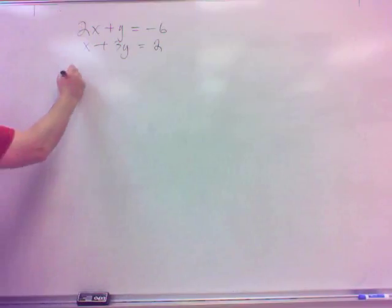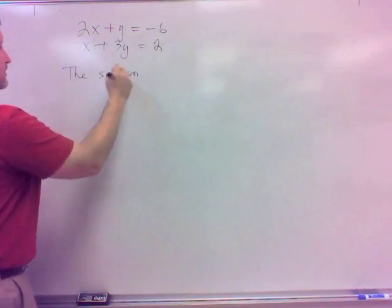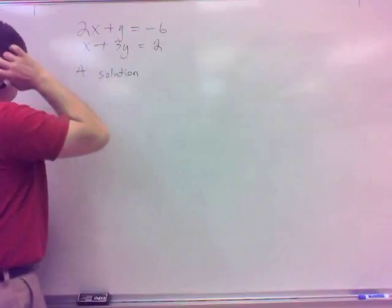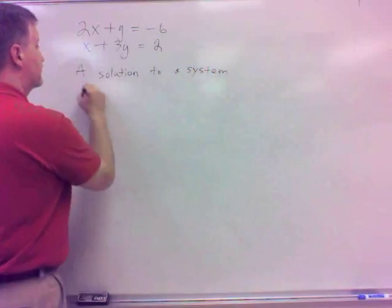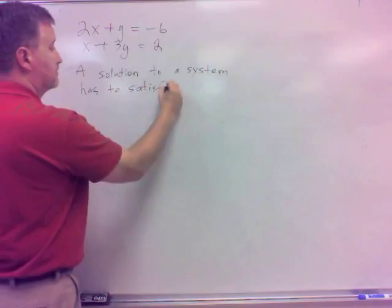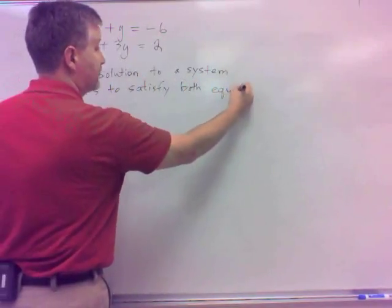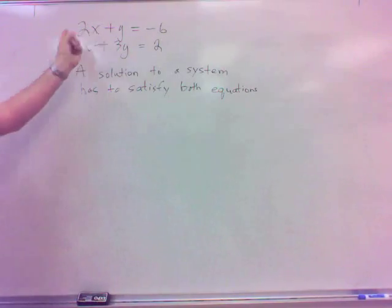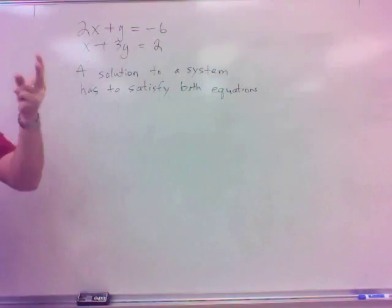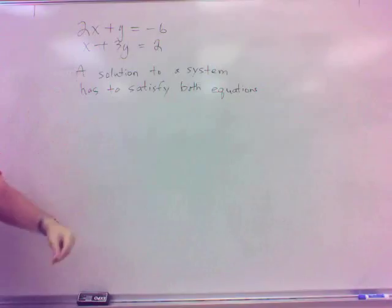And what we just talked about is the solution to this system has to do what? It has to work in both. A solution to this system or any system has to satisfy both equations. Or all the equations, our systems, we won't talk about them here in this course, but there are systems where you have more than two equations. But in any case, your solution has to work in both equations. And, you know, it's a two-part equation. That's kind of why we're talking about it now, right after talking about graphing, is because these are XY equations or two variable equations. And so you do need a two-part solution, an X and a Y, but you do need it to satisfy both equations.